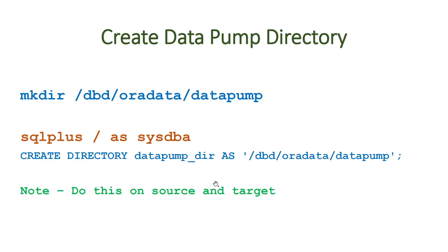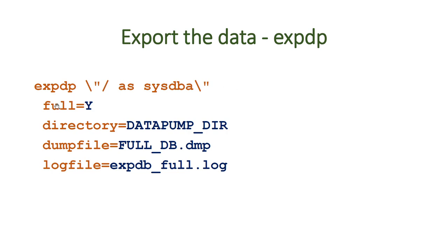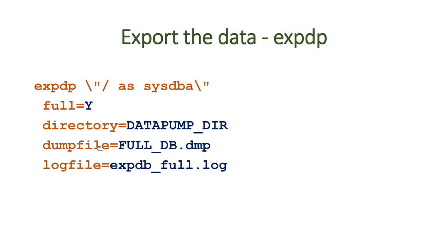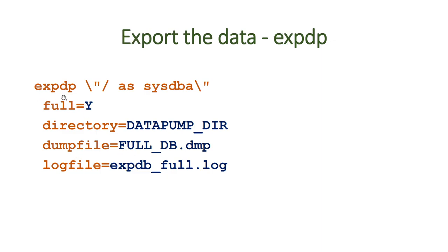Once the setup is done, we can use the expdp utility. Here we use the name of the directory we created, the name of the dump file that will be generated by expdp, and the log file name. The impdp command is exactly the same except you replace expdp with impdp, using the exact same options.